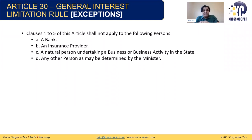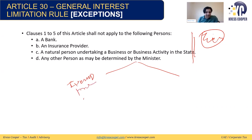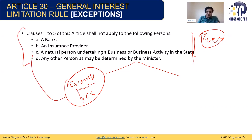There are exceptions to the general interest capping rules — certain taxable persons are exempt from them. These include banks, insurance providers, natural persons undertaking business activity in the state, and any other person as may be determined by the minister. These four categories of taxable persons are not subject to interest capping rules. All remaining taxable persons are subject to the rules.